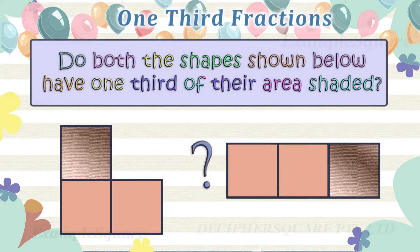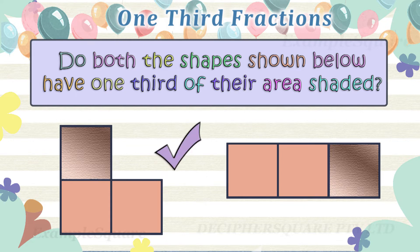Do both the shapes shown below have one-third of their area shaded? Yes, both the shapes have one-third of their area shaded.